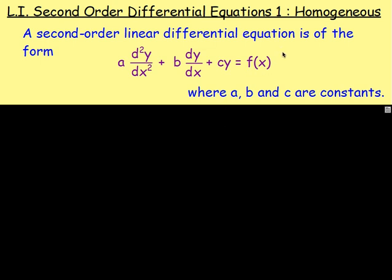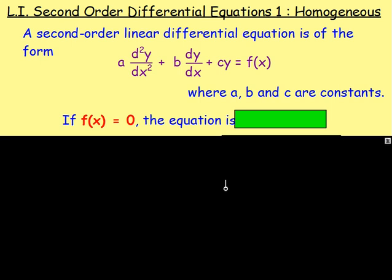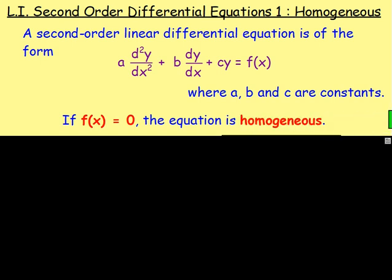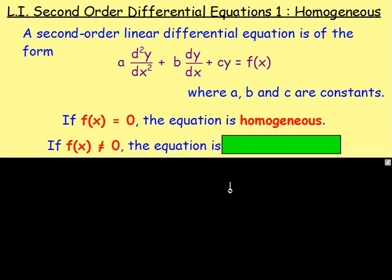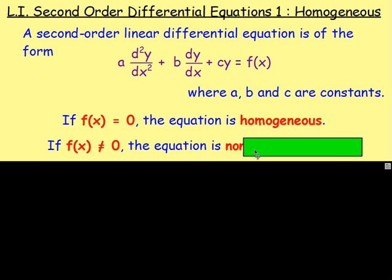If f(x) equals zero, the equation is said to be what's known as homogeneous. And if f(x) does not equal zero, then the equation is said to be non-homogeneous.